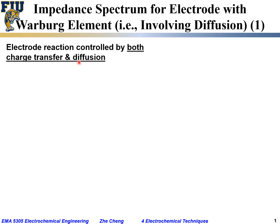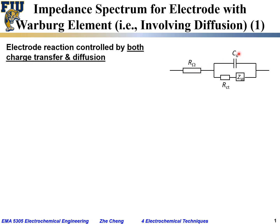These systems are generally for electrode reactions controlled by both charge transfer and diffusion in the electrolyte. The equivalent circuit for such an electrode reaction includes, as before, the ohmic resistance R_ohm representing the ohmic resistance contribution from the electrolyte, and the double layer capacitor representing the charge-discharge process at the electrode-electrolyte interface.